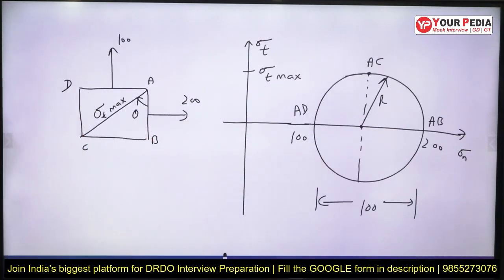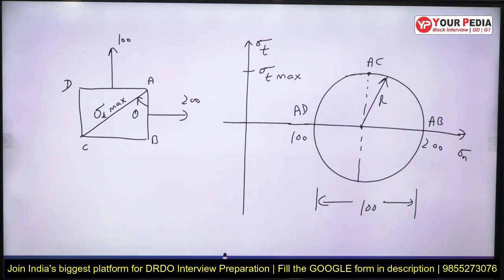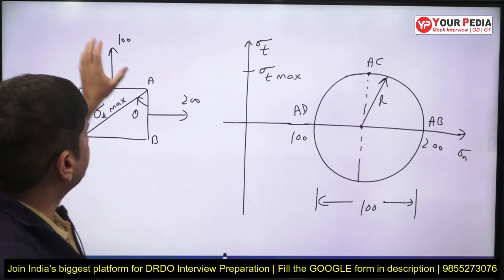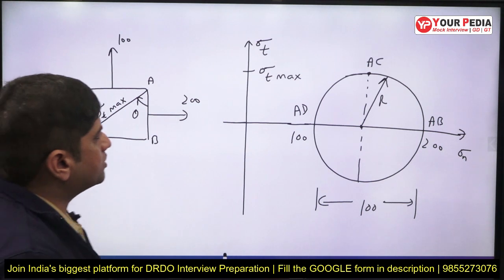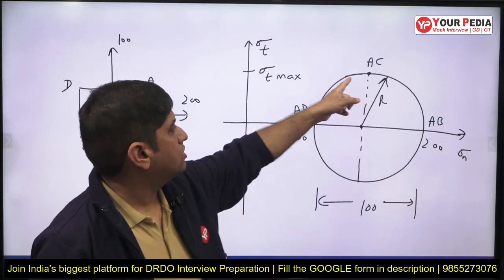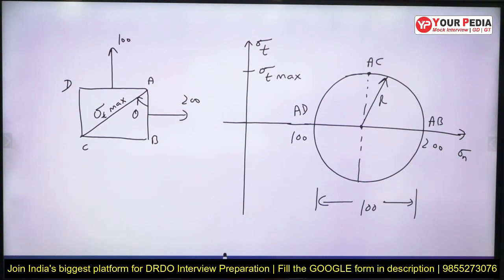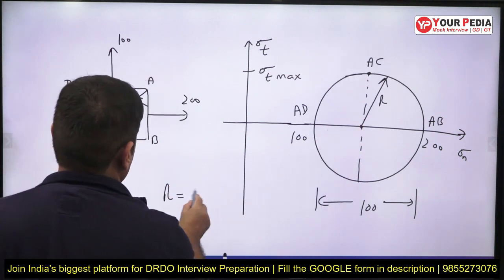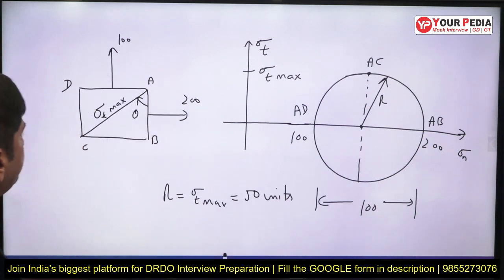For two-dimensional stress loading, the Mohr's circle is straightforward. The x-axis is the normal stress axis and the y-axis is the shear stress axis. The AB plane plots at 200 units (sigma_x), and the AD plane — which is 90° away in reality but 180° on Mohr's circle — plots at 100 units (sigma_y). Maximum shear stress equals the radius of Mohr's circle. The diameter is 100, so the radius is 50 units — that is the maximum shear stress, and it acts on the AC plane.